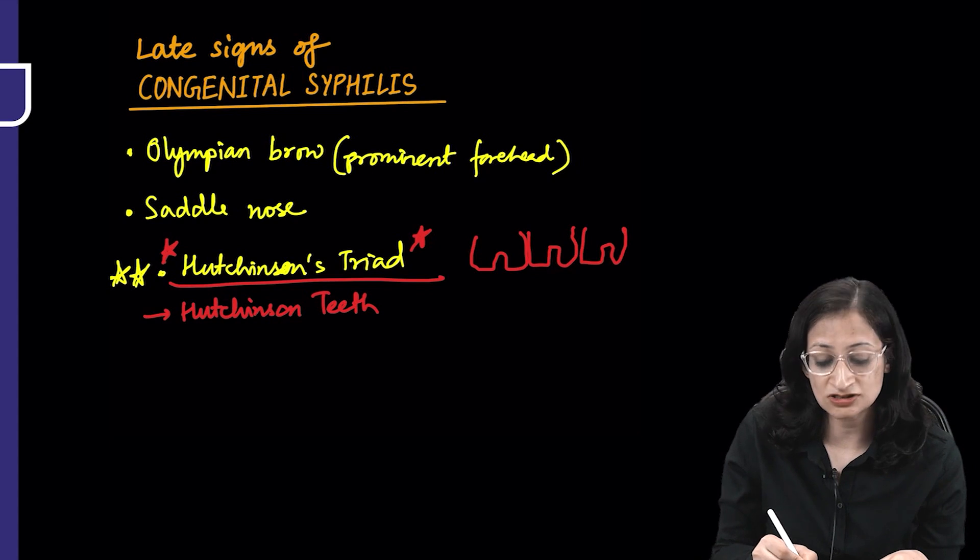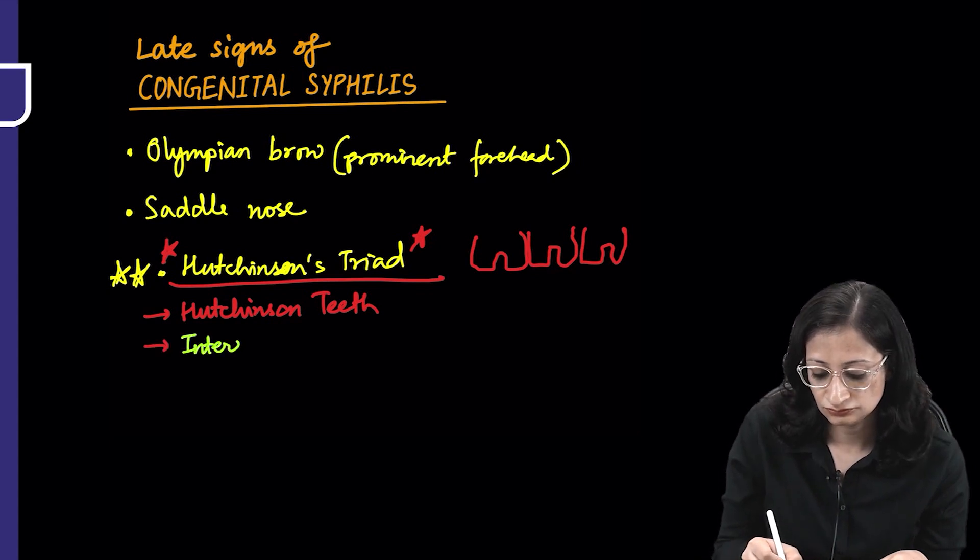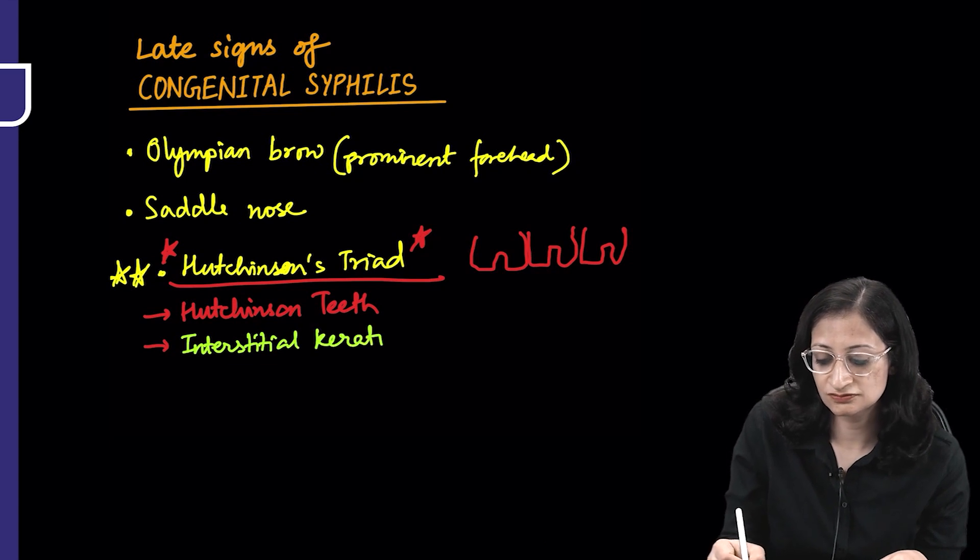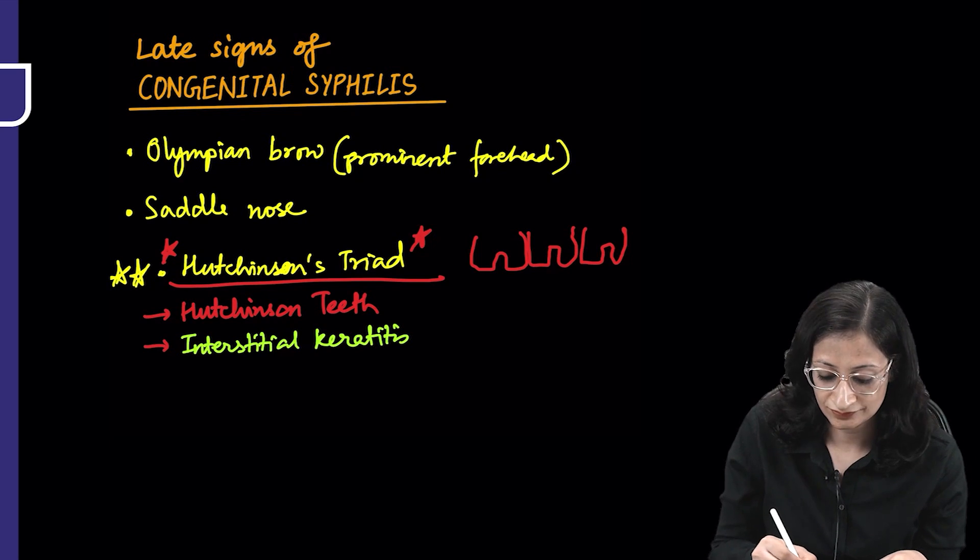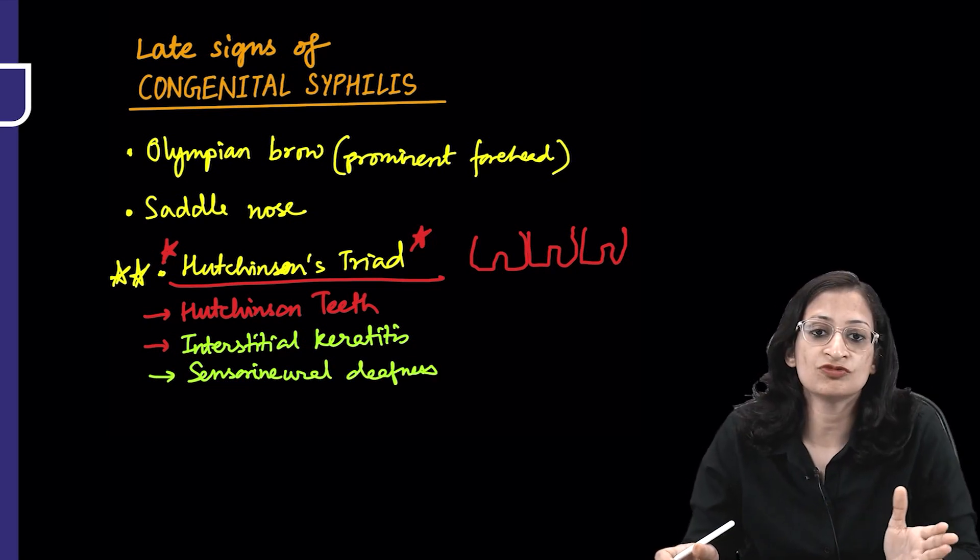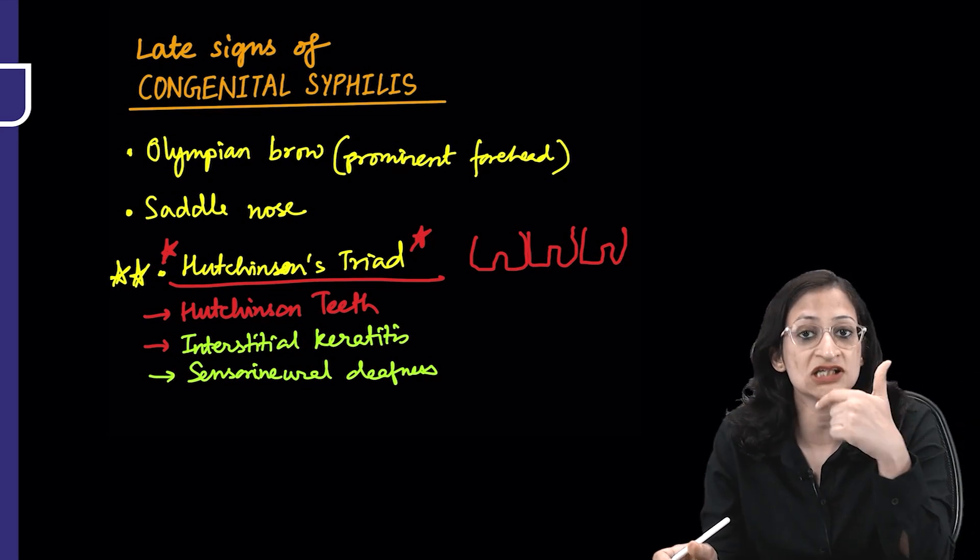Then you have interstitial keratitis and sensorineural deafness. So from head to toe, we're moving: Olympian brow, saddle nose, then this triad involving the teeth, the eyes, and the ears.